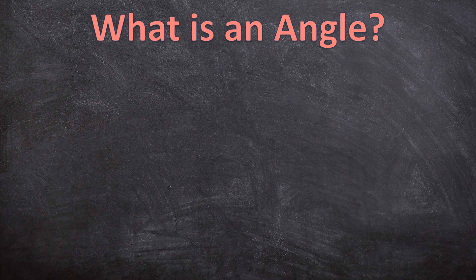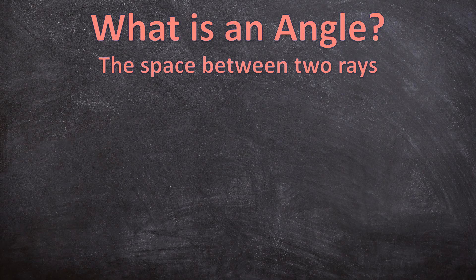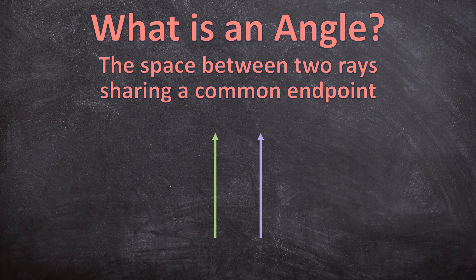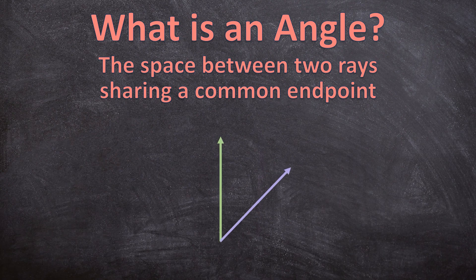An angle is the space between two rays when the two rays are sharing a common endpoint, like these two rays. So that will be the space between the two rays sharing a common endpoint — and that is the angle.